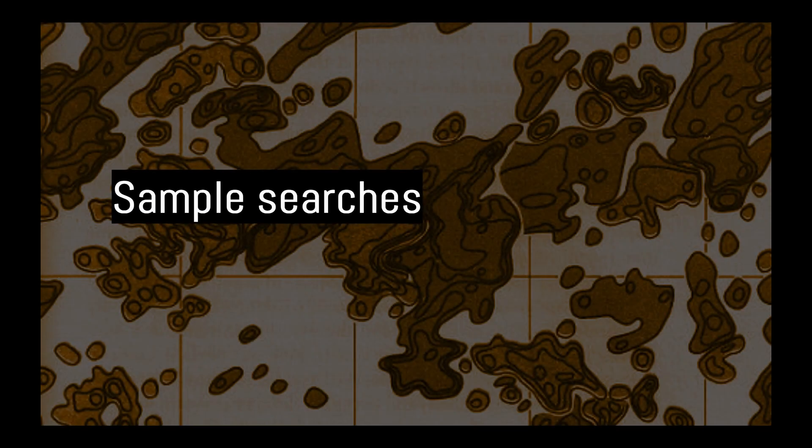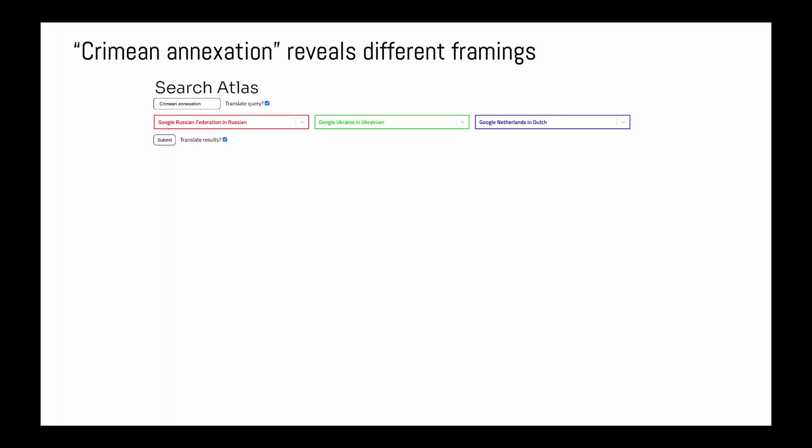Now we'll show you the results for sample queries that reveal provocative differences between locations and languages. Our first example involves Crimea, the site of a territorial dispute between Ukraine and Russia.